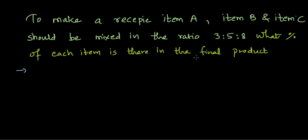But now what we need is the final product percentage composition of each item. So we know that item A is to B is to C is 3 is to 5 is to 8. Now percentage of item A can be given by the parts of item A which is 3 divided by the total parts.